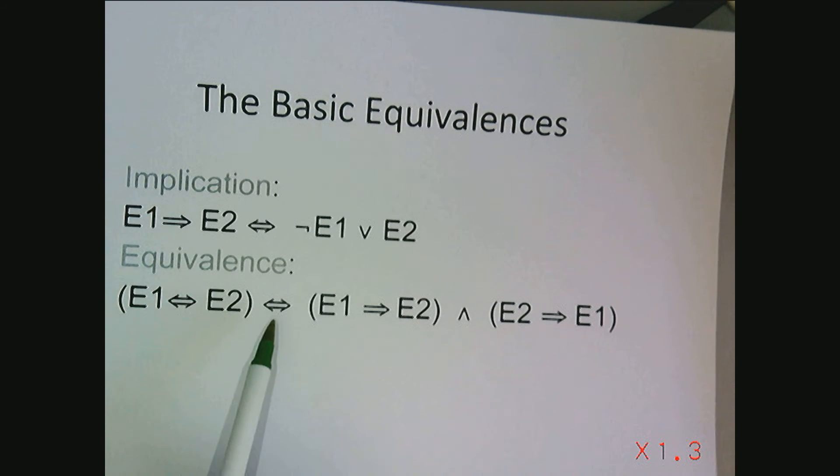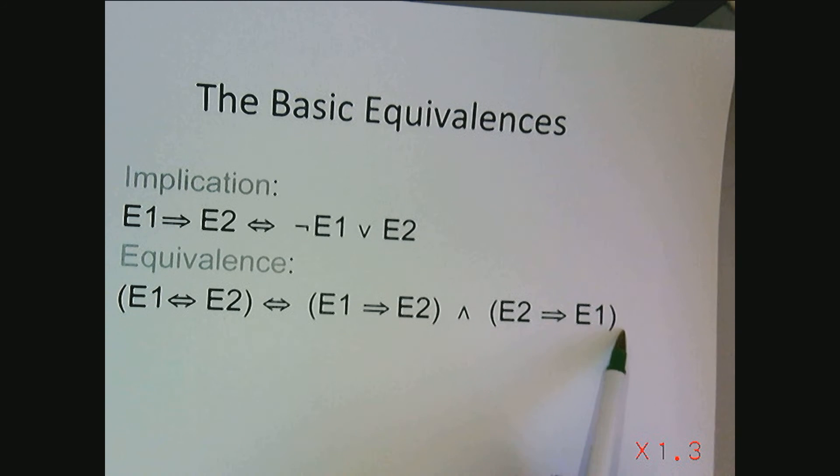Equivalence means if you want to show that E1 is equivalent to E2, one strategy is to show that E1 implies E2 and E2 implies E1. Often this is the strategy that we use in mathematics to prove that two predicates are equivalent. Not so much in this course because we're going to be using equivalent style proofs.